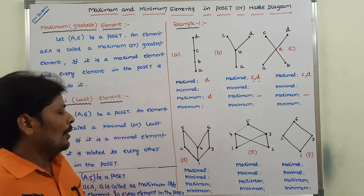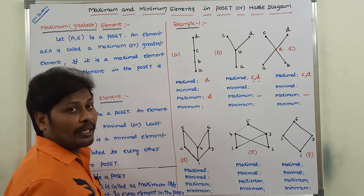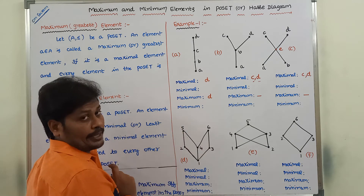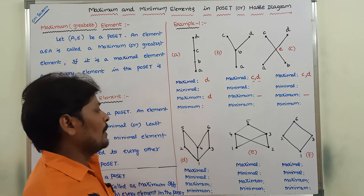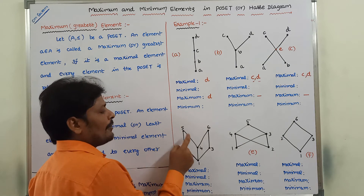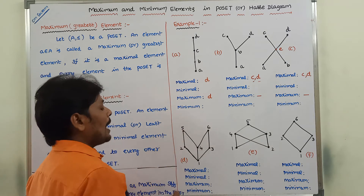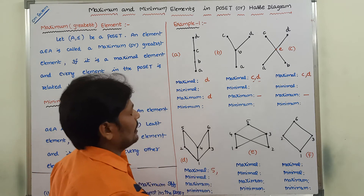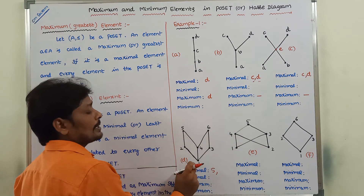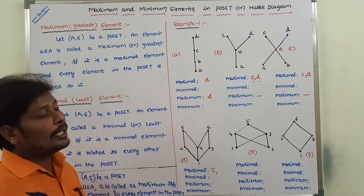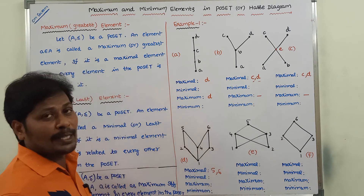Consider diagram D with numbers. First, the maximal elements are 5 and 6, because element 5 does not have any immediate successor in the upward direction, and element 6 does not have any immediate successor in the upward direction. Also, 5 is not related with 2, 4, 3, or 1. And 6 is not related with 5, 1, or 2. Element 6 does not have any immediate successor. Hence, we can say that 6 is also a maximal element.